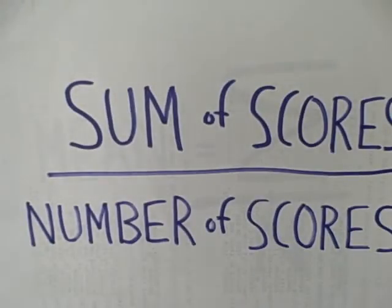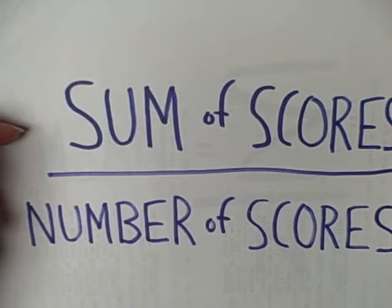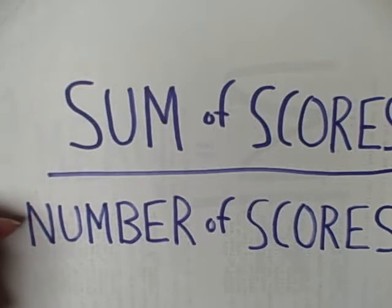Today we're specifically going to talk about one measure of central tendency known as the arithmetic mean. It is calculated by the following equation. The numerator involves the sum of the scores of our data set, and the denominator is the number of scores in our data set.